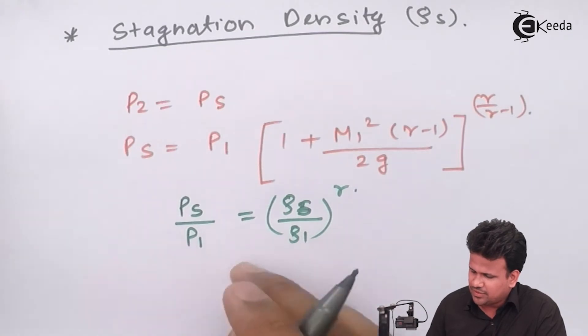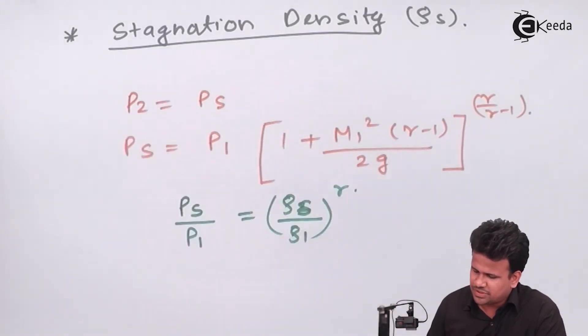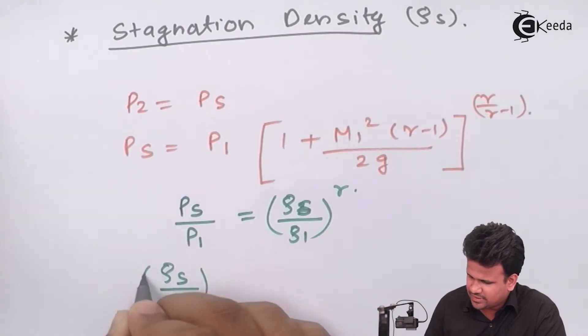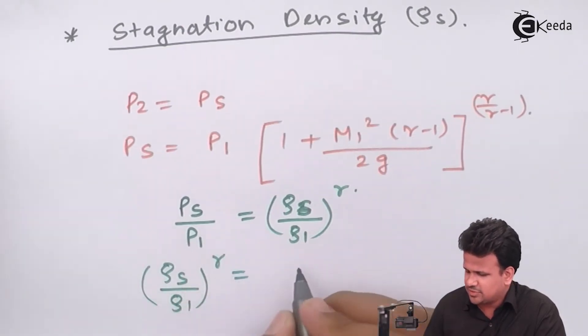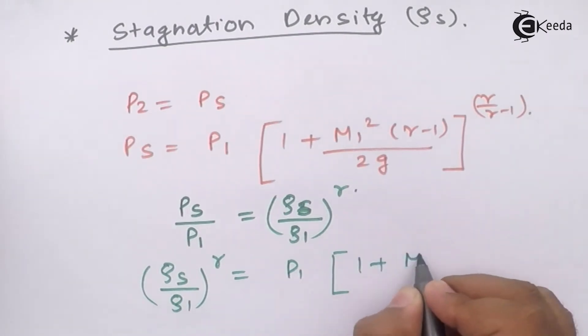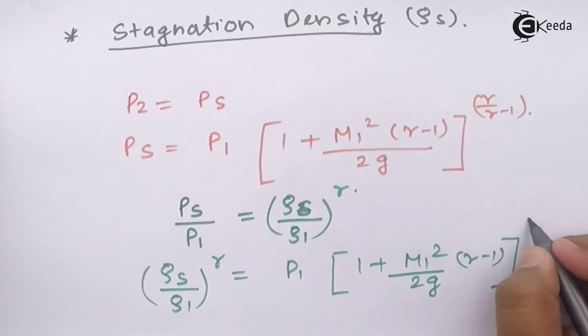Let us substitute this value in the equation. What you will get is rho stagnation upon rho 1 raised to gamma equals [1 plus M1 squared upon 2g times (gamma minus 1)] raised to gamma upon (gamma minus 1). We have used the equation for an adiabatic process.